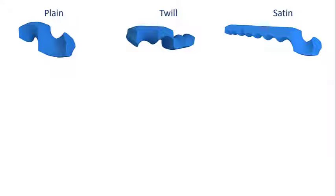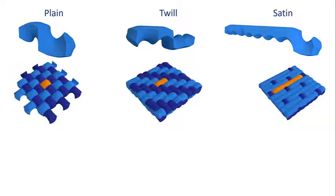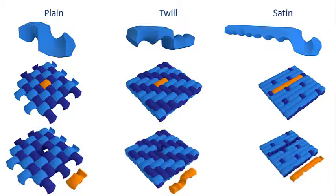These are the space-filling tiles obtained for a unit curve segment for the three weave patterns. This shows the assembly of space-filling tiles by their replicas, with a tile removed to reveal the inner structure.